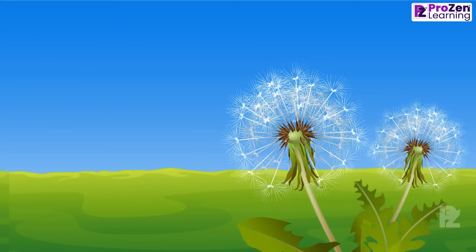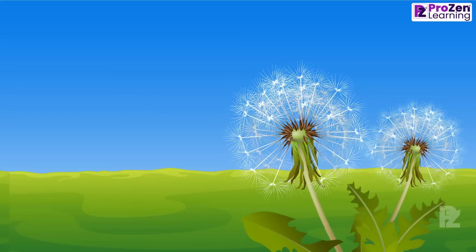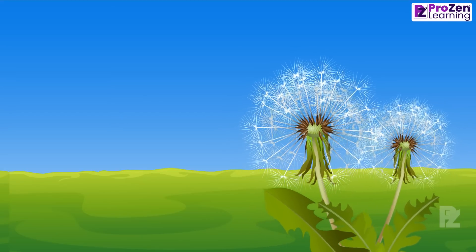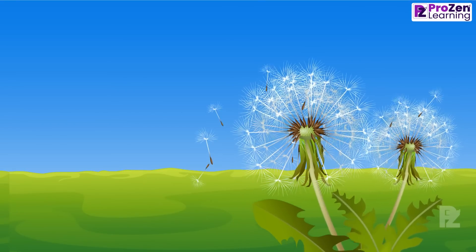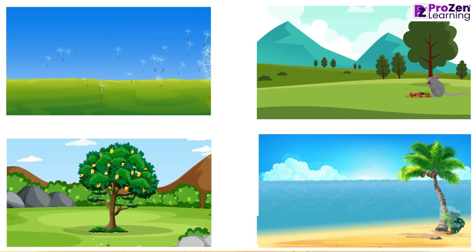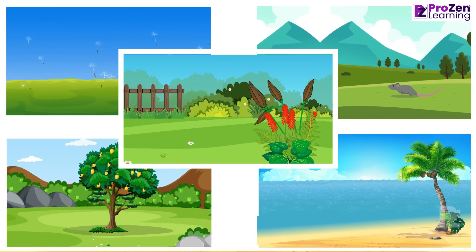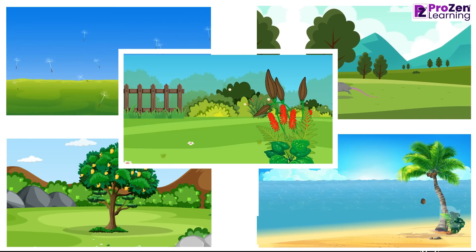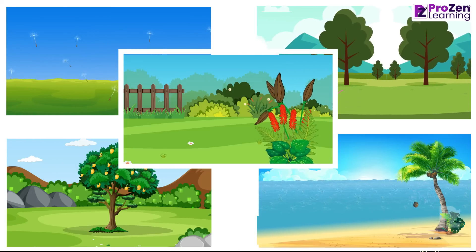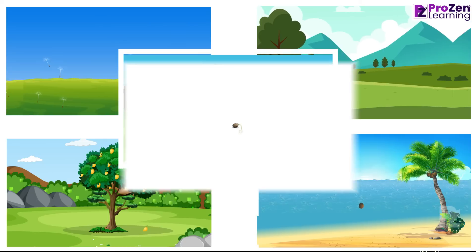Seed dispersal is an incredible process that ensures plant diversity and survival. By utilizing wind, water, animals, gravity, or even explosive mechanisms, seeds embark on their own remarkable journeys, finding new homes to grow into vibrant plants.